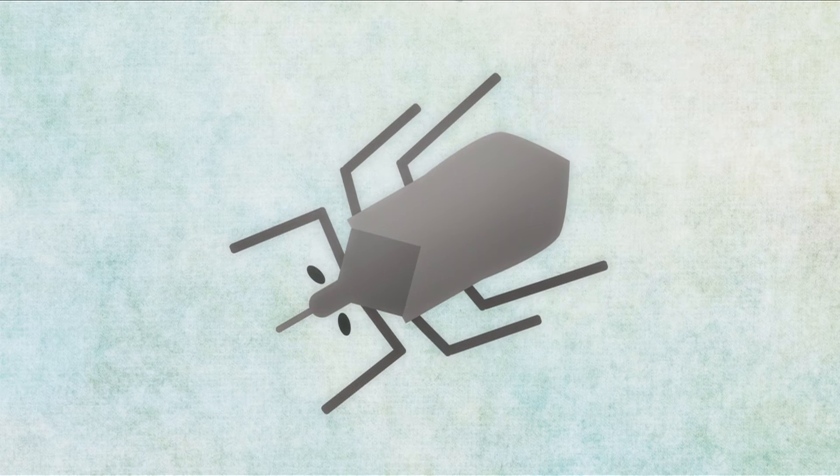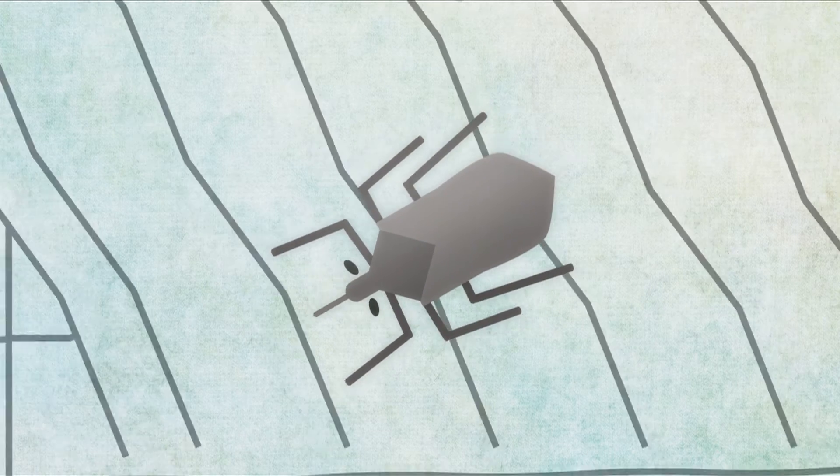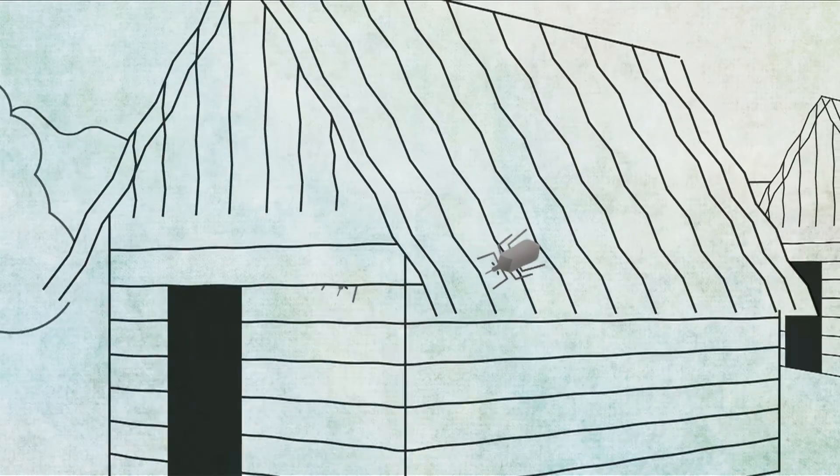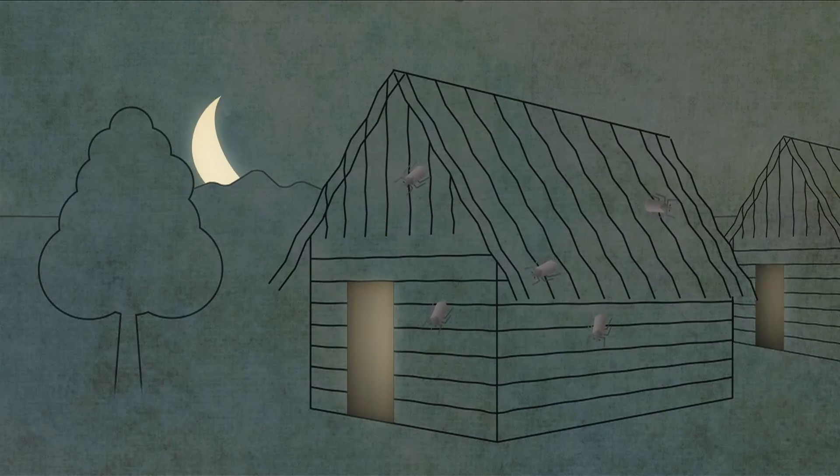The parasite is transmitted by a vector called the triatamine bug, nicknamed vinchuca in Latin America. The bug hides between stones in the walls of houses and under straw roofs.